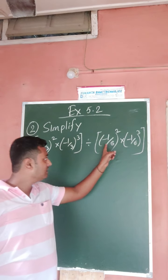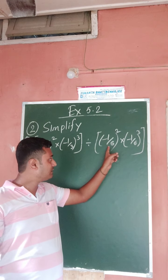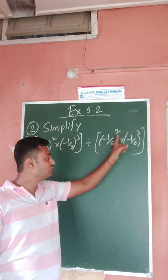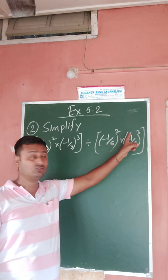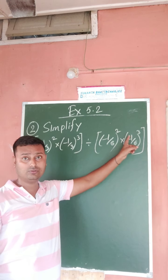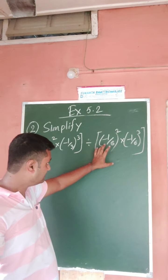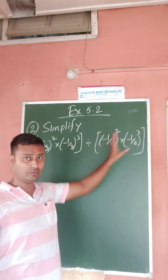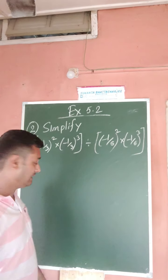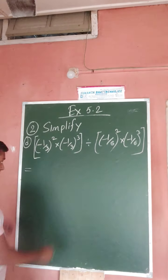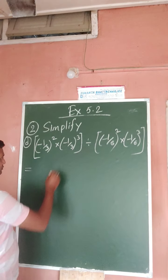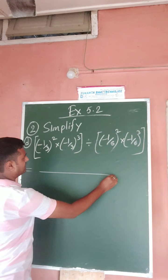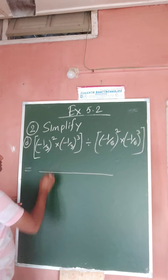Again look at this part: minus 1 by 6 whole square, minus 1 by 6 whole cube. That means this part is also a to the power n into a to the power n. So both terms in numerator and denominator follow this pattern, and we can write them accordingly.